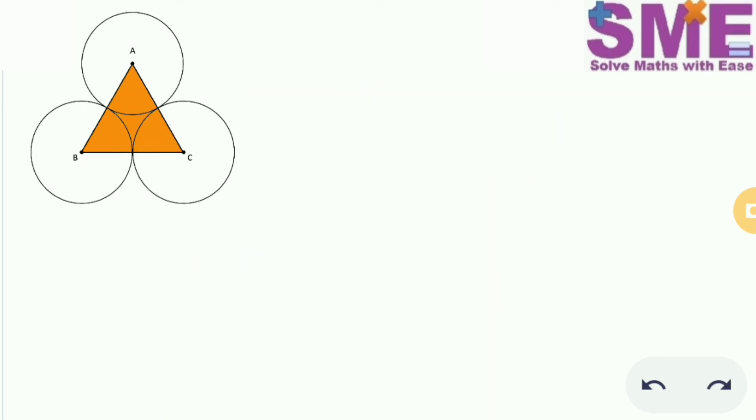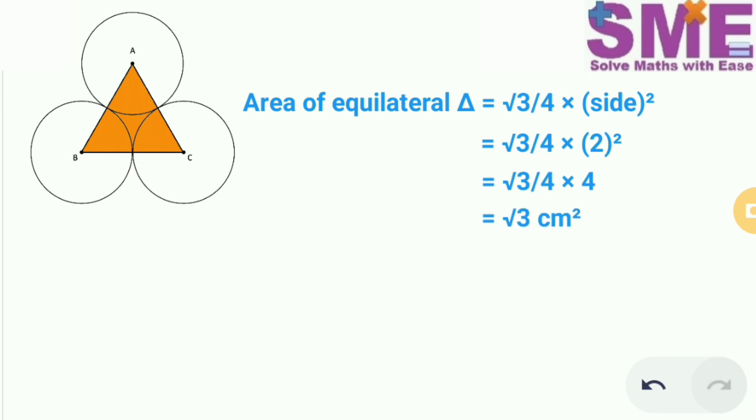Now we will find the area of this equilateral triangle. The formula is √3/4 × side². We know that the side of the triangle is 2 cm. So substituting this value we get √3/4 × 2². So the area of this equilateral triangle is √3 cm².